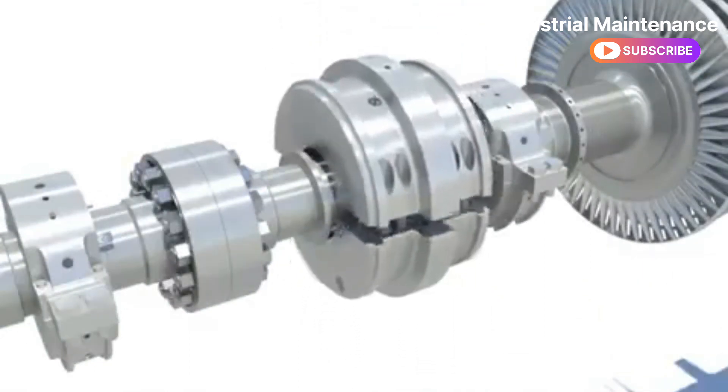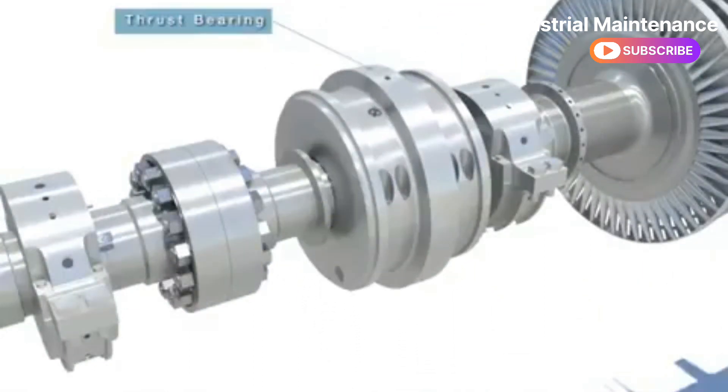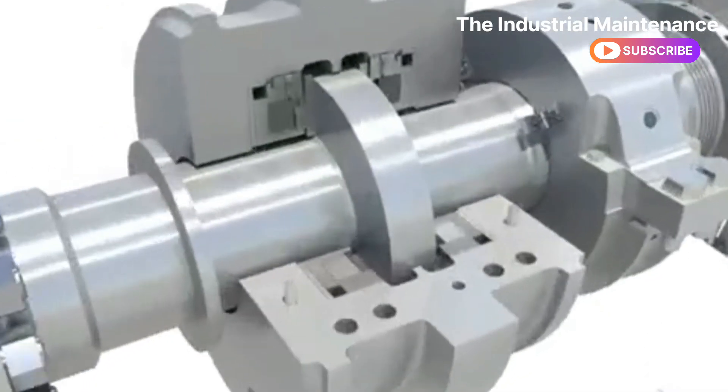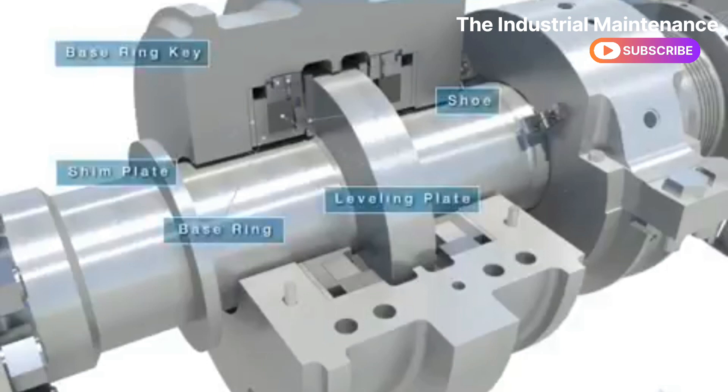The thrust bearing is located between number 2 and number 3 of the journal bearing and prevents the movement of the turbine axial which has exceeded the limit.